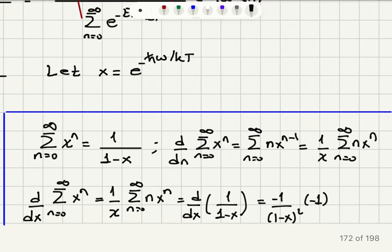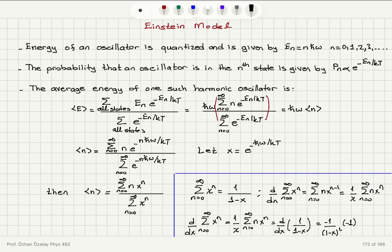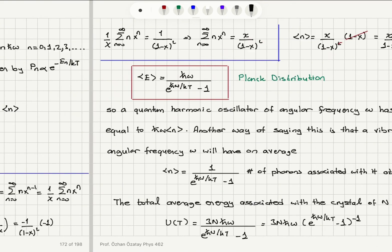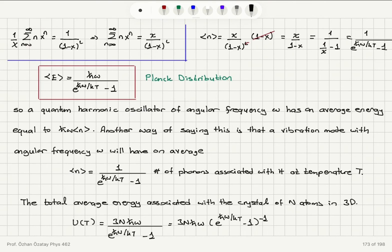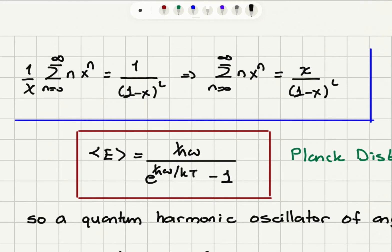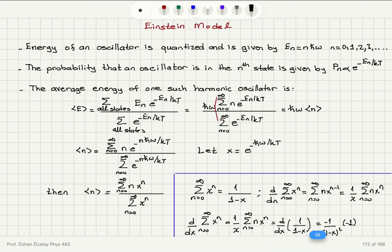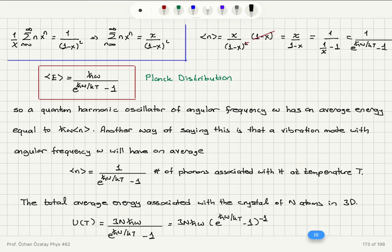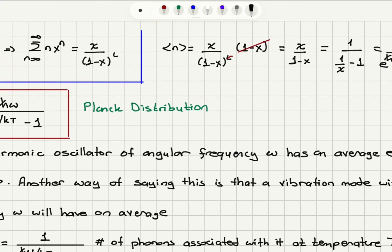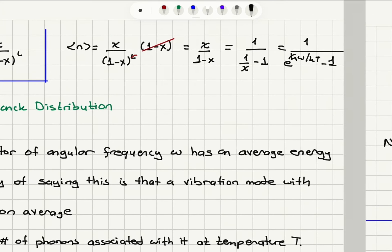The derivative of 1/(1−x) with respect to x is −1/(1−x)² times (−1), giving 1/(1−x)². Substituting these results: the numerator sum of n·xⁿ equals x/(1−x)². The denominator is 1/(1−x), which in the denominator becomes (1−x). So the average value of ⟨n⟩ is x/(1−x)² times (1−x), simplifying to x/(1−x).